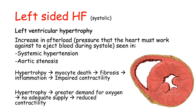Another cause of systolic heart failure is left ventricular hypertrophy. If you have an increase in afterload — the pressure the heart must work against to eject blood during systole — such as systemic hypertension or aortic stenosis, the left ventricle needs to work much harder to pump blood. This leads to hypertrophy, which over time causes myocyte death, fibrosis, and inflammation, impairing contractility. Additionally, hypertrophy means more tissue and greater oxygen demand, and since the heart cannot supply all that tissue, you get reduced contractility — ultimately leading to systolic left-sided heart failure.